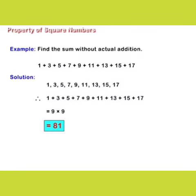Solution: 1, 3, 5, 7, 9, 11, 13, 15, and 17 are the first 9 odd numbers. Therefore, the sum of 1 + 3 + 5 + 7 + 9 + 11 + 13 + 15 + 17 = 9 × 9 = 81.